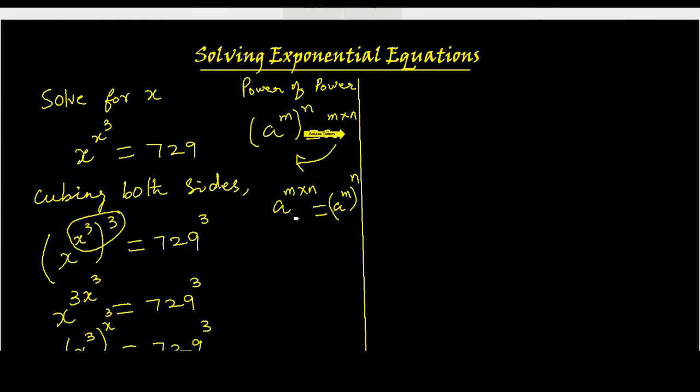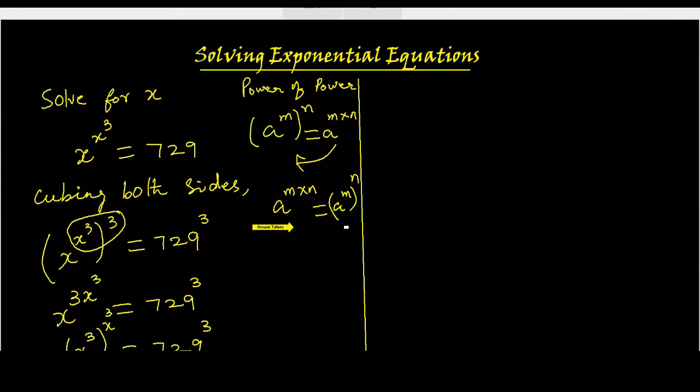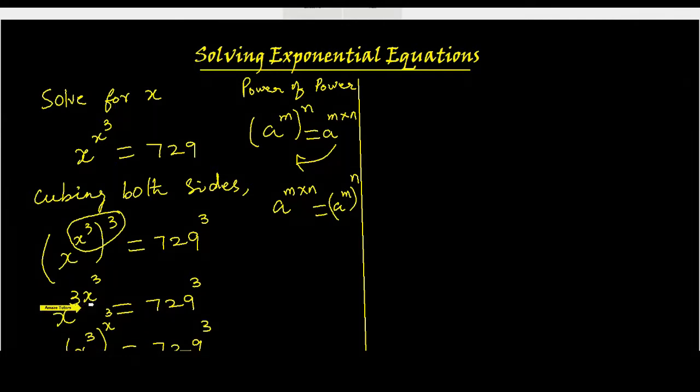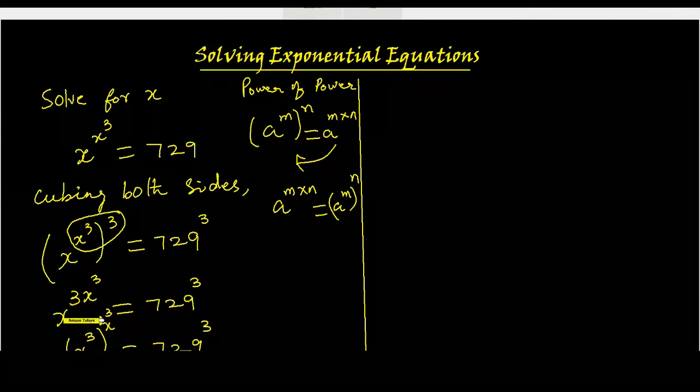So a power m times n, that is what I did. I multiplied the 3 and x cubed to get 3x cubed. Now the same rule can be used even the right side, a power m times n can be written as a power m to the power n. X power 3 to the power x cubed, this multiplication I split as power.